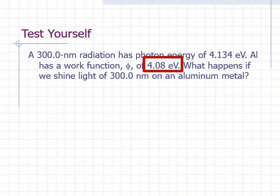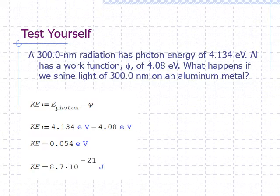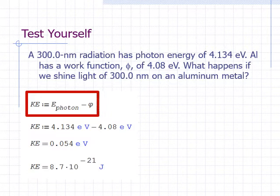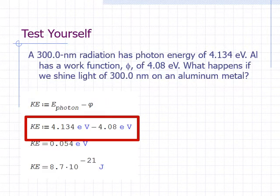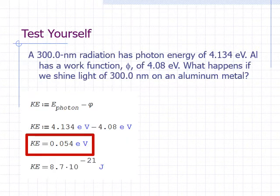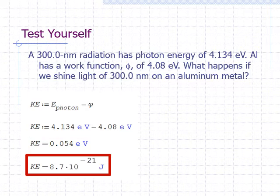Therefore, an electron will be ejected and the kinetic energy of the electron will be the difference between the photon energy and the energy needed to dislodge it from the metal. 4.134 electron volts minus 4.08 electron volts gives us 0.054 electron volts. The extra energy of 0.054 electron volts becomes the kinetic energy of the electron. We can convert it to joules and we get 8.7 times 10 to the negative 21 joules.